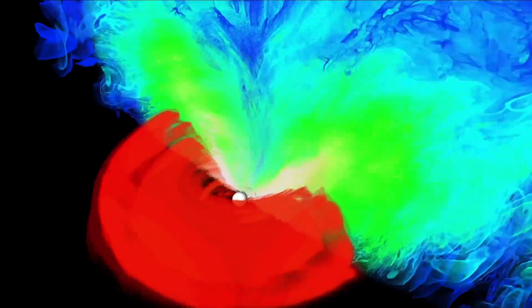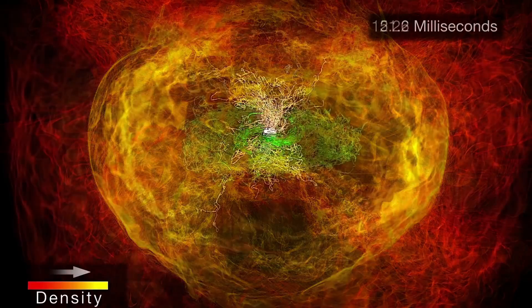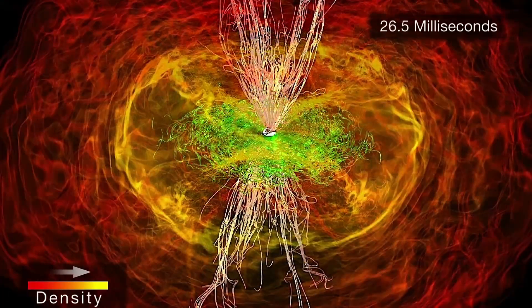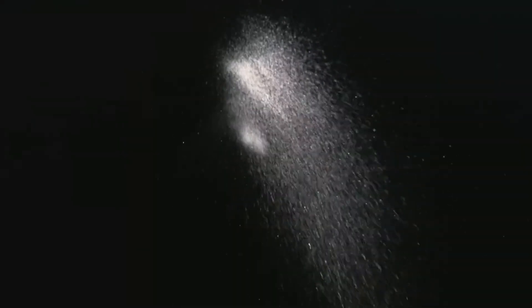And then there are the monsters at the heart of galaxies: supermassive black holes, millions, even billions of times the sun's mass. Where did they come from? No one knows for sure. Did they grow from stellar black holes over billions of years, or were they born big in the early chaotic youth of the universe? We're still searching.